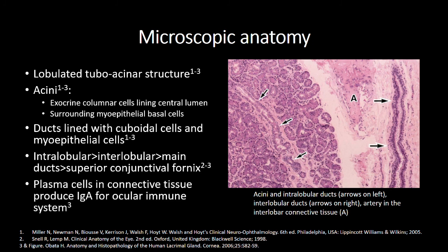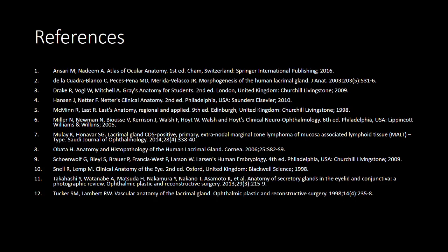It is important to note that the connective tissue contains plasma cells which produce IgA, a key factor in the ocular immune system. I hope you found this an interesting introduction into the anatomy of the lacrimal gland. Thank you.